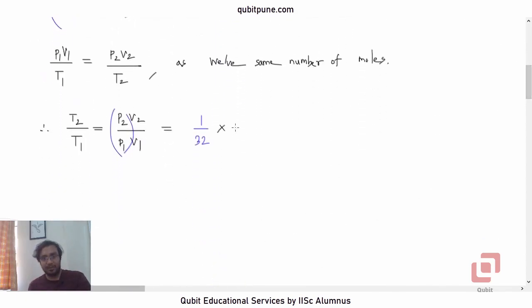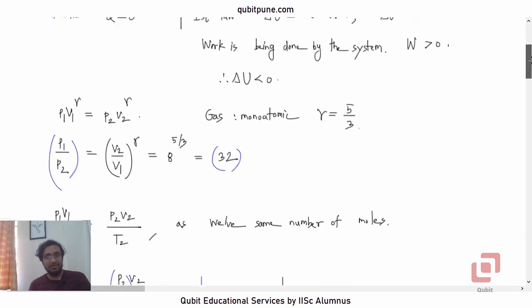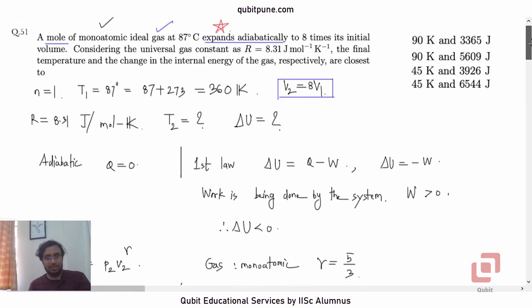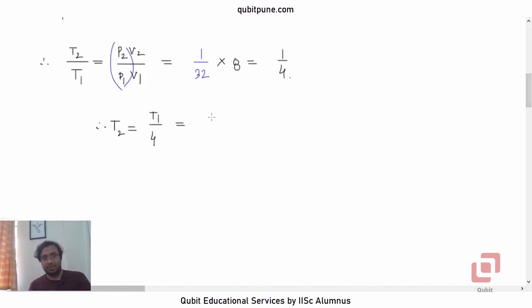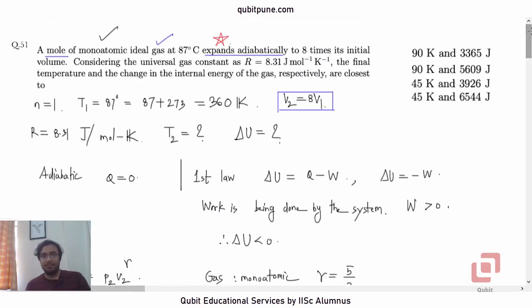So T2/T1 will be 8/32 or 1/4. So T2 will be T1/4. T1 is 360 Kelvin, so 360 Kelvin divided by 4 gives us 90 Kelvin. As we expected, it is less than the original temperature, and the change in internal energy will be negative. So it is either option A or B.